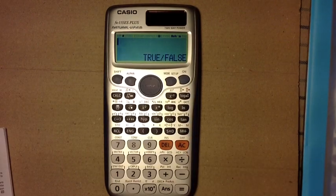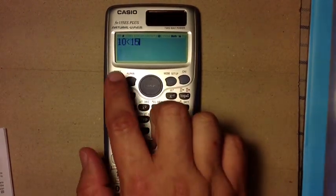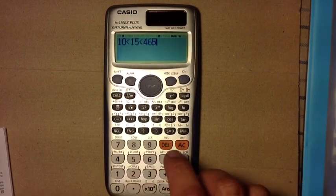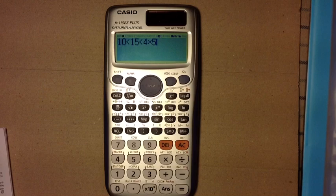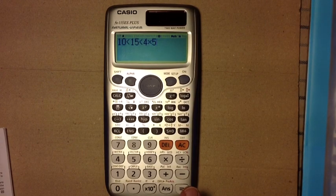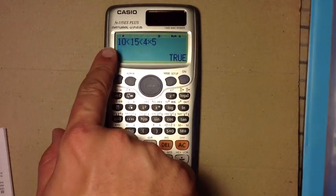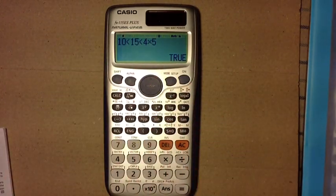And you can do chain comparisons with this mode. So, I'm here testing, is 10 less than 15 less than 4 times 5? And you know that's true because 10, in fact, is less than 15 is less than 4 times 5, which 4 times 5 is 20. So, that is the verification mode.